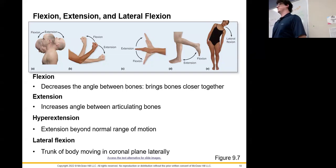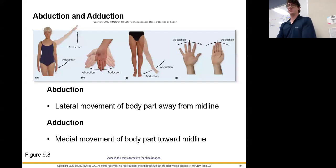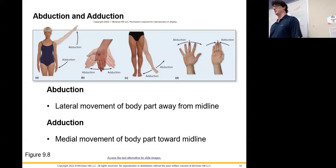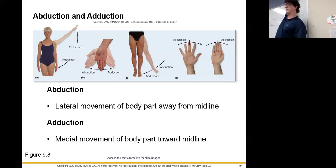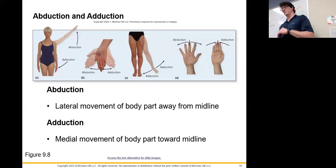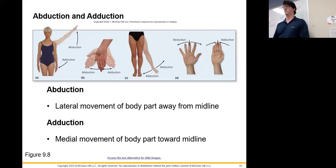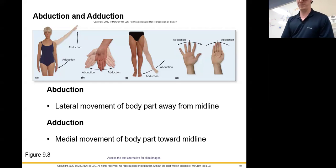Abduction is movement away from the midline — opening your fingers, raising your arm out to the side. Adduction brings the limb back toward the midline. An easy memory trick: your arm is being 'abducted' by aliens when it goes away; adduction is 'adding' it back to the middle. This applies to the shoulder, fingers, and hips.